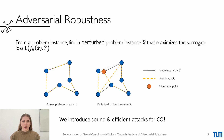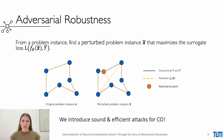Finding an adversarial example means looking for a perturbed problem instance that maximizes a given loss. In the case of TSP, you're looking for a perturbed graph that maximizes the difference between the ground-truth route and the predicted route. You can do this, for example, by adding a node to the graph. However, as you can see in the right figure, adding a node to the graph also changes the ground-truth route.